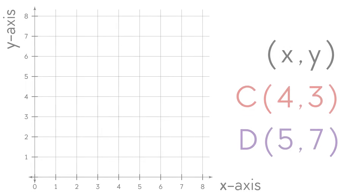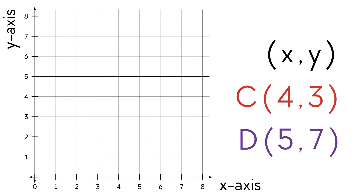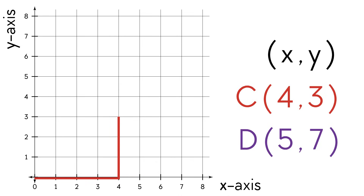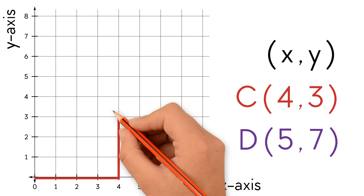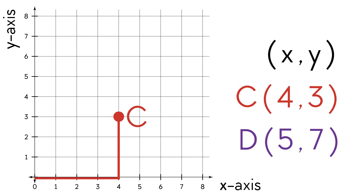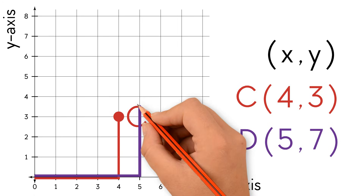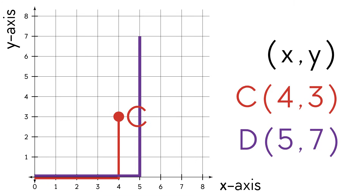Let's try some more examples. Plot the point C, (4, 3). We move right 4 units, and then up 3 units. We plot and label the point. Now let's plot D, (5, 7). We move right 5 units, and then up 7 units. Plot the point.